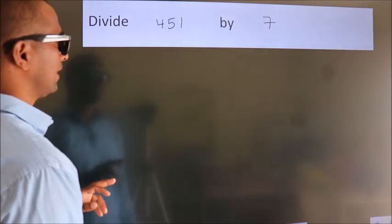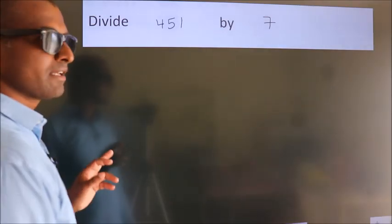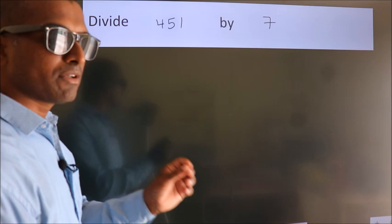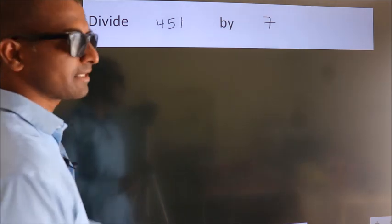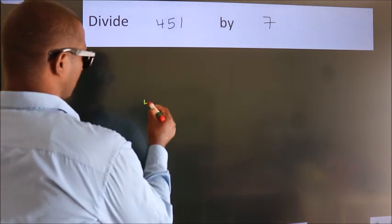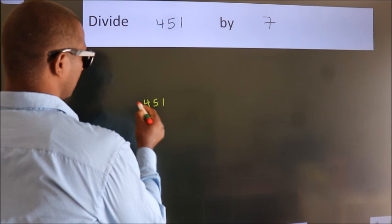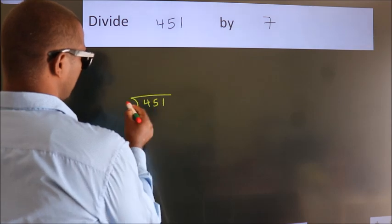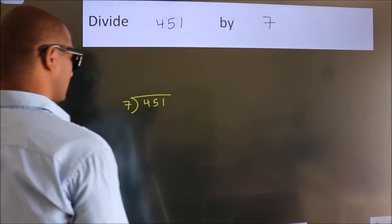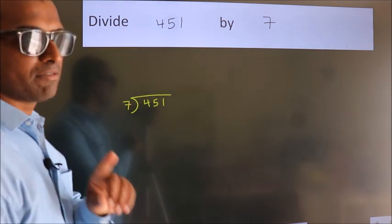Divide 451 by 7. To do this division, we should frame it in this way: 451 here, 7 here. This is your step 1.